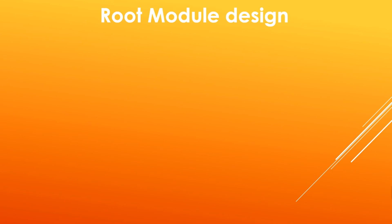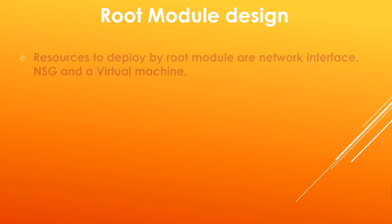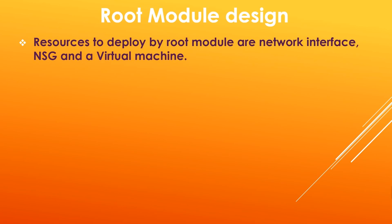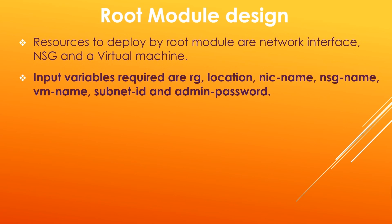Now based on our scenario, let us design a root module. We need a network interface, an NSG, and a virtual machine to be deployed by the root module. To deploy all these resources, we need to know the resource group name, location, network interface name, NSG name, and VM name.